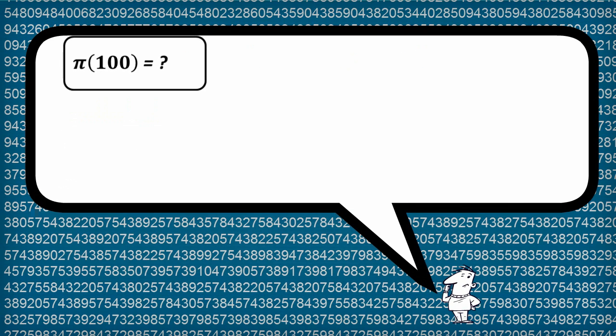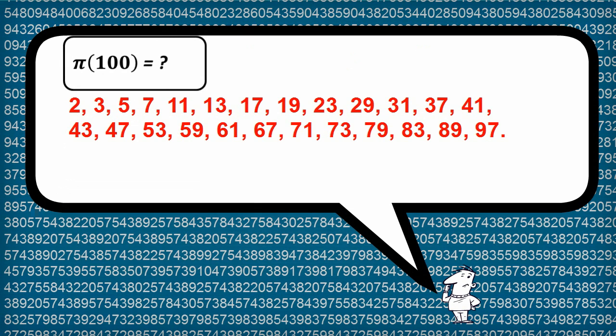What about π(100)? Well, there are 25 primes less than or equal to 100. And here they are. So π(100) equals 25.